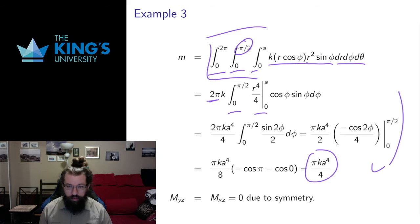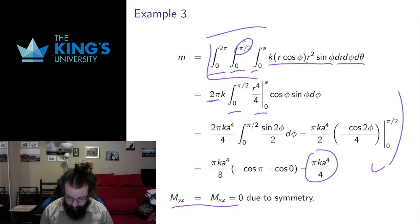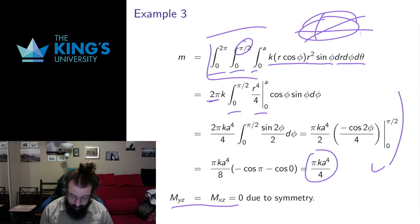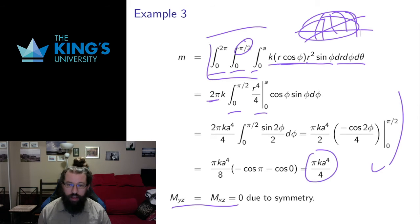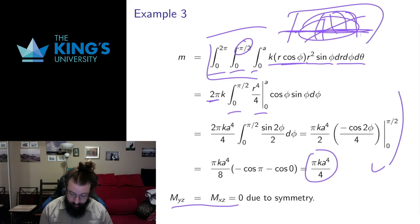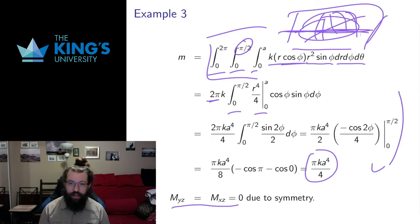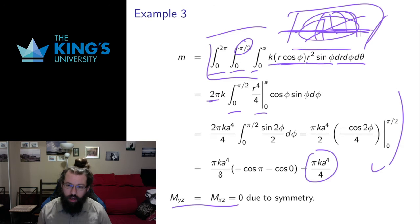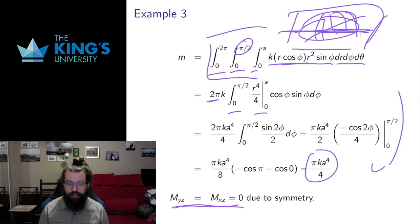Now I calculate the first moments. The first thing to argue is that the first moments in x and y have to be zero. This hemisphere has density that only depends on height kz. If I look at the distance from the yz or xz planes, those vertical planes slice the hemisphere directly in half, and the density is equal on either side since it only depends on height. So I get a quarter sphere on either side with the same density, meaning these two moments — which measure mass distribution on either side of those vertical planes — have to be zero by symmetry.